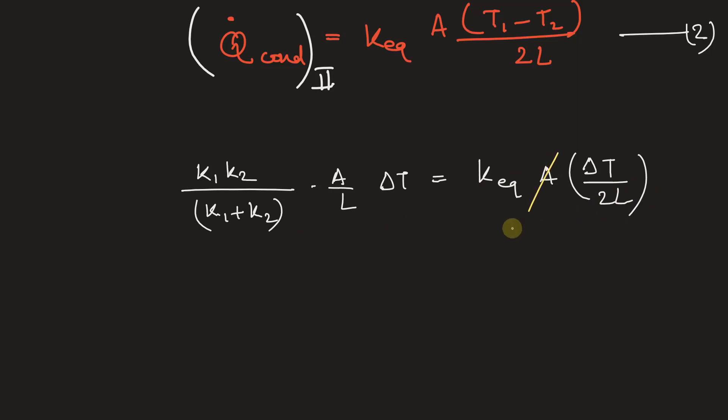In this equation, we can cancel out A, L, and delta T. So K_equivalent from here, we can write 2 times K1 times K2 by K1 plus K2. So this is the required answer.